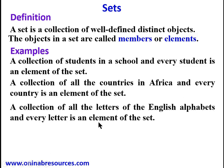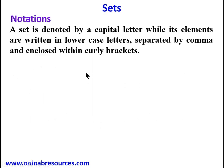So we look at set notation. A set is denoted by a capital letter while each element is written in lowercase letters, separated by comma and enclosed within curly brackets. For example, we have a set A which comprises of elements a, b, c, d, and e.